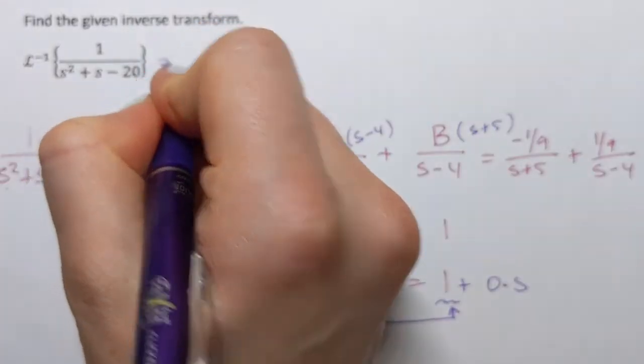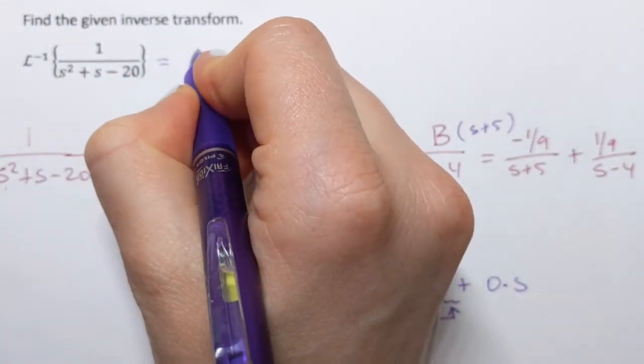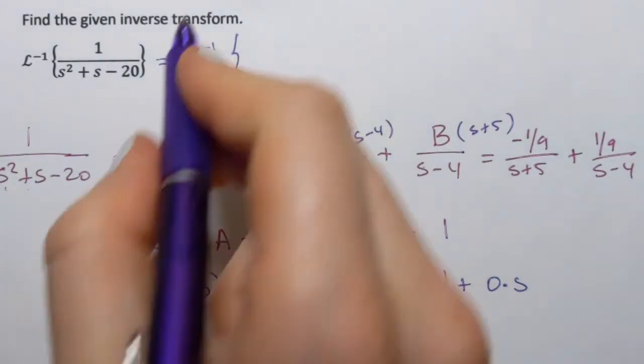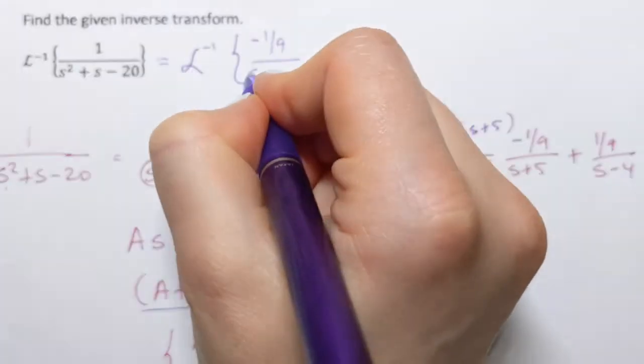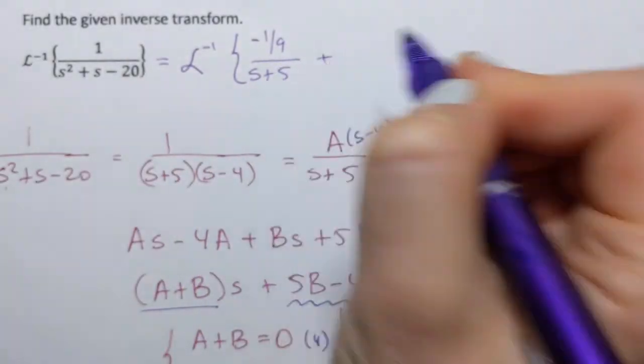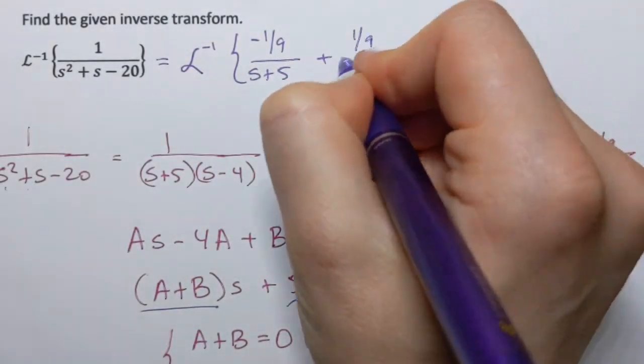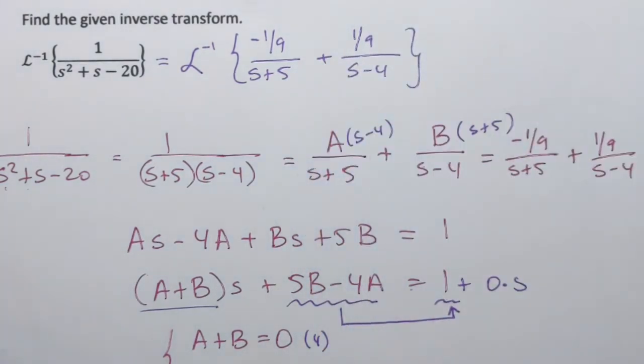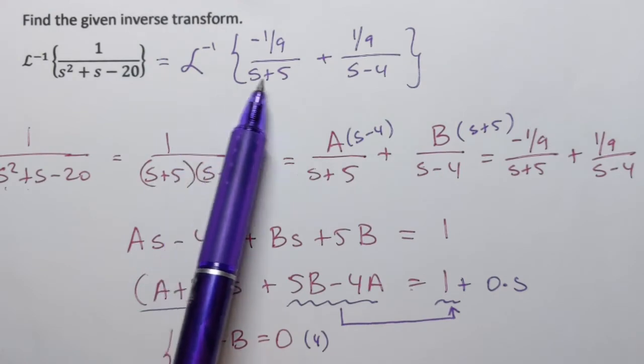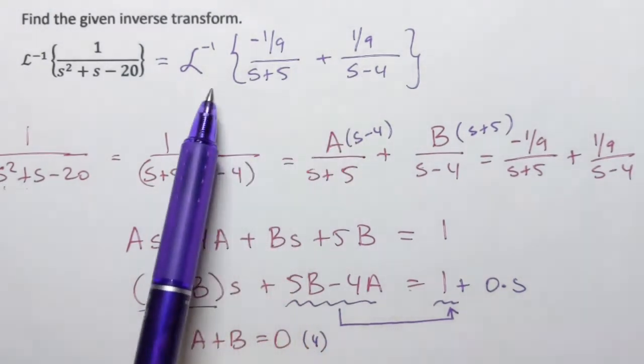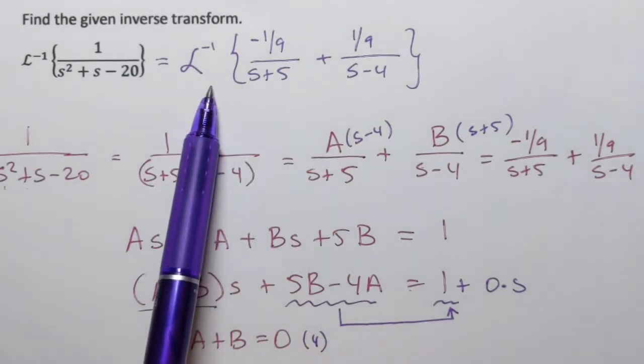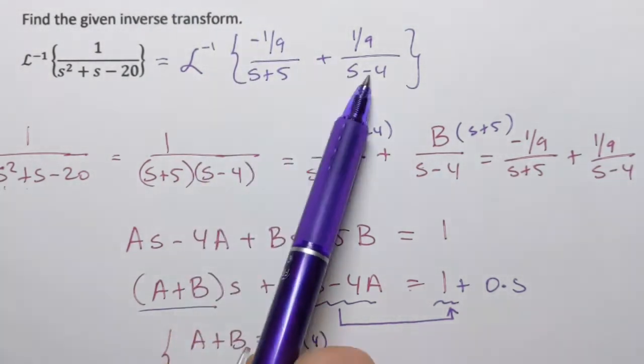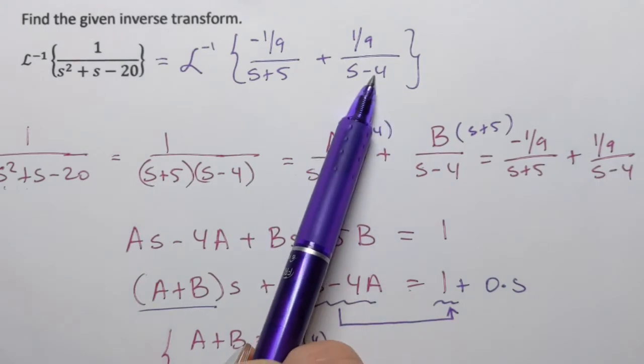So our function we can now write as the sum of two other functions. So inverse transform of the following: negative 1 over 9 over s plus 5 plus 1 over 9 over s minus 4. So we have Laplace transform of a sum.